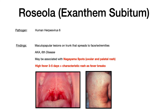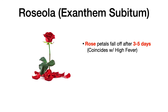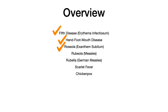The way to memorize this is: roseola — think of a rose. After three to five days, rose petals die and fall off. That perfectly coincides with roseola, where the patient has a very high fever for three to five days, then the fever falls off and the rash appears. Three to five days of high fever, then rash — that timeline is so specific to roseola and is what differentiates it from the other exanthems on your exam.